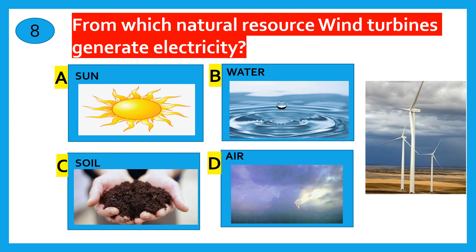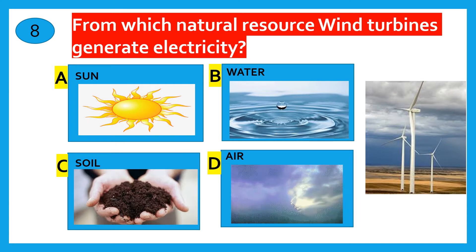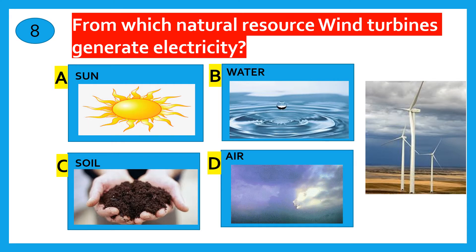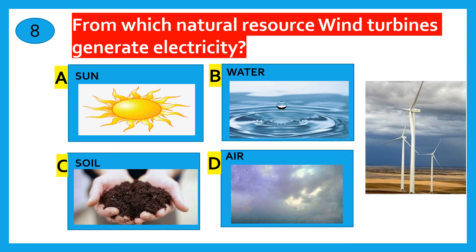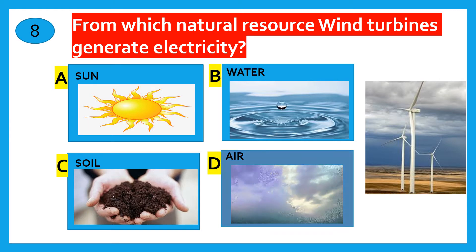From which natural resource do wind turbines generate electricity? Sun, water, soil, air. The correct answer is air.